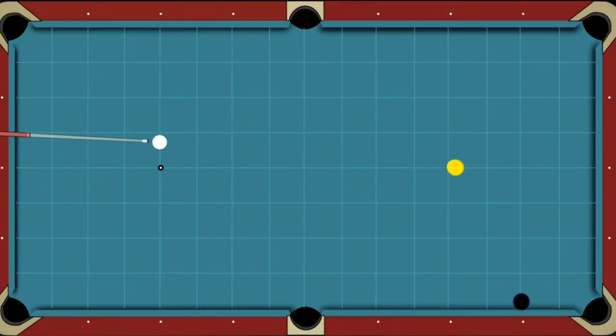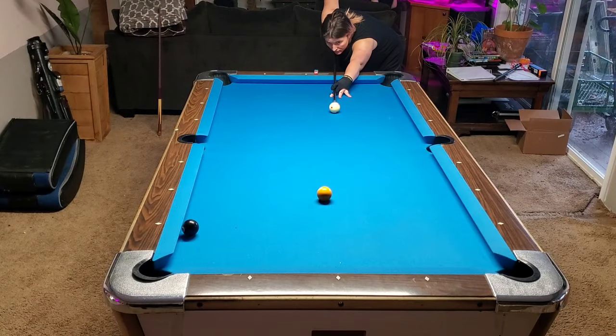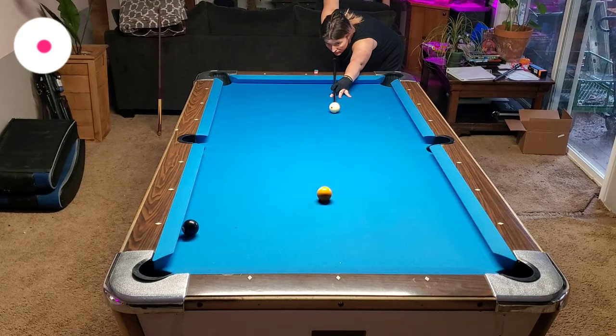In this first situation I want to pocket the one ball, leaving myself good position on the eight ball. The tangent line of the one ball intersects the center of the corner pocket, so any variation of a center ball hit could result in a scratch shot.